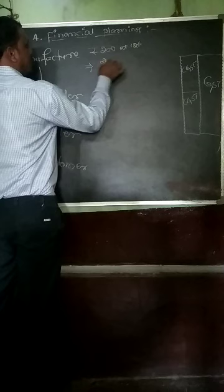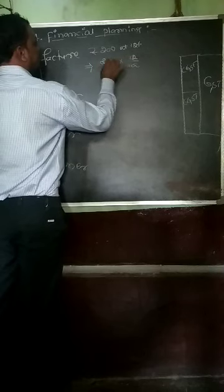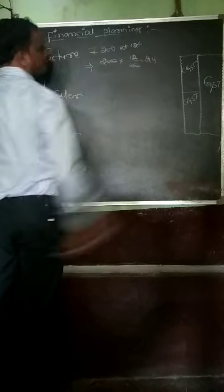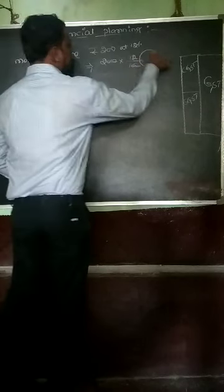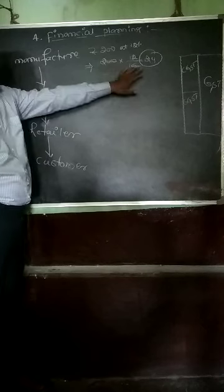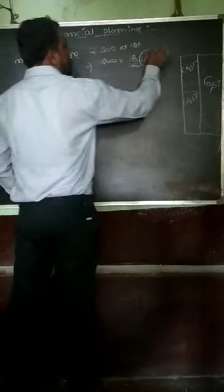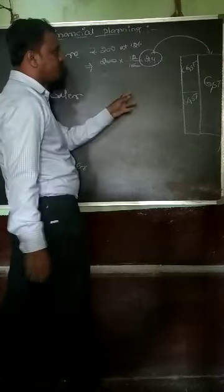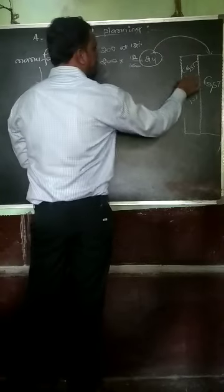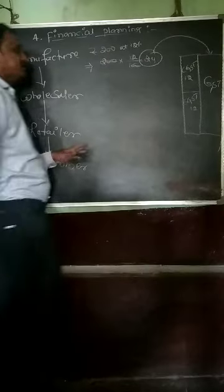To find out the GST: 200 into 12 divided by 100 equals Rs. 24. So the manufacturer gives the watch to the wholesaler and one watch is Rs. 224 including GST. He paid direct GST of Rs. 24 — half of 12% — Rs. 12 for CGST and Rs. 12 for SGST.